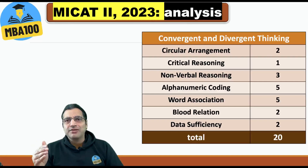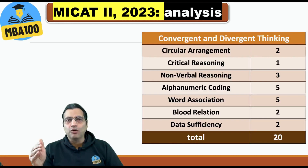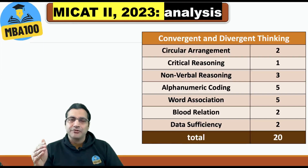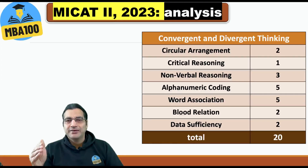In convergent and divergent thinking: circular arrangement — 2 questions, critical reasoning — 1, non-verbal reasoning — 3, alphanumeric coding — 5, word association — 5 (something you only get in this test), blood relation — 2, data sufficiency — 2. Total of 20 questions.